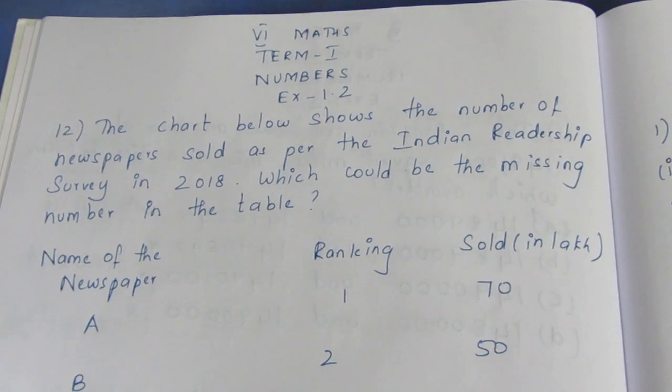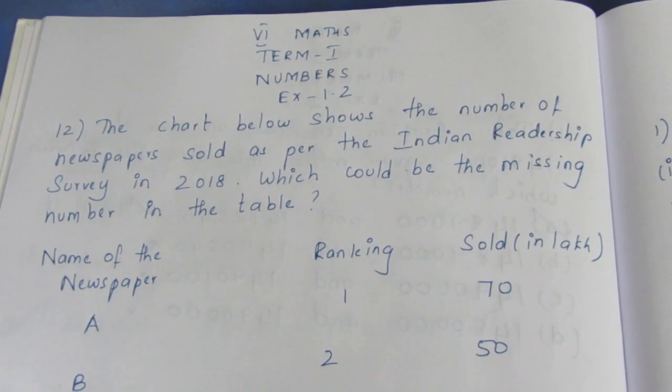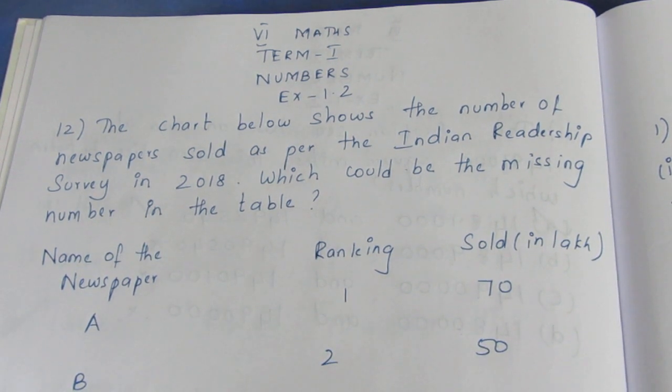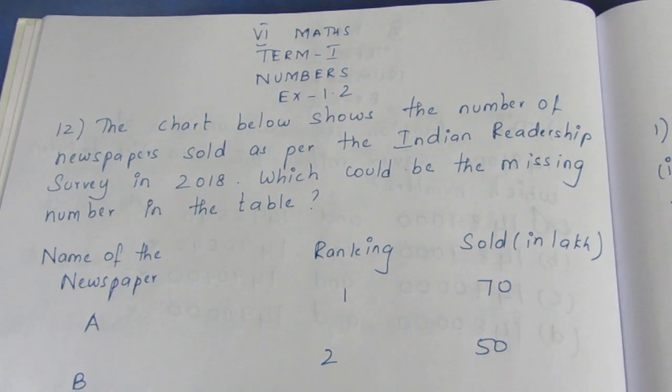Hello viewers, I am Aitli. In the 6th maths term 1 numbers, exercise 1.2, the 12th sum, let me ask you a question. The chart below shows the number of newspapers sold as per the Indian readership survey in 2018. Which could be the missing number in the table?